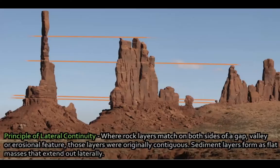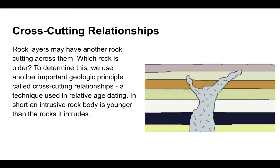You can see the lines showing where rock used to be between formations, and you can tell that the layers are continuous across the distance. All of that rock was continuous at one time, but over the years parts of it have eroded away. Now we're going to talk about cross-cutting relationships.